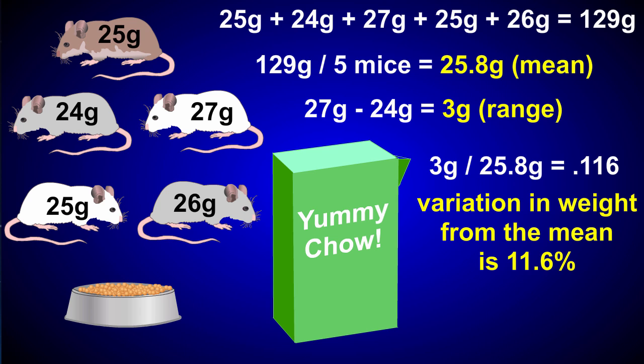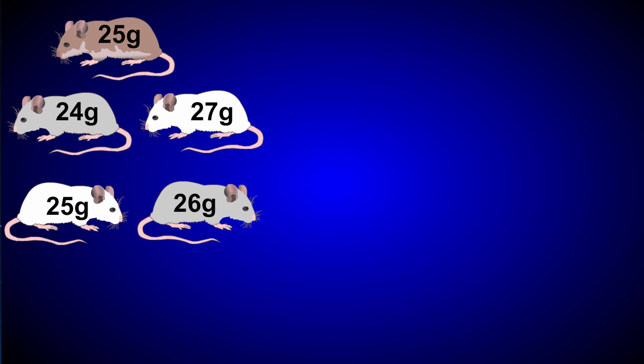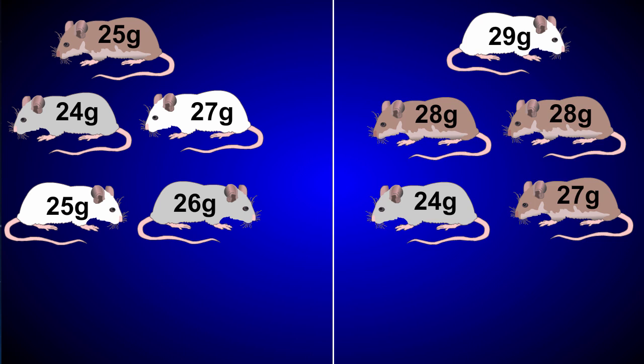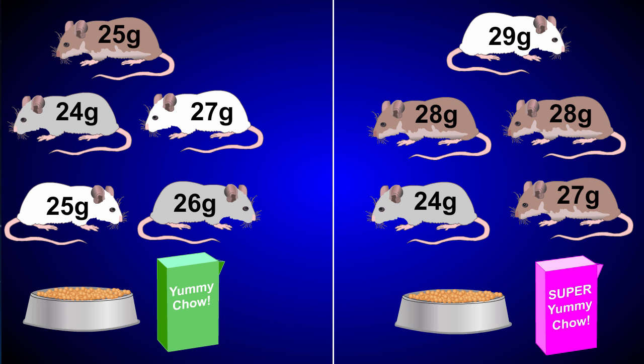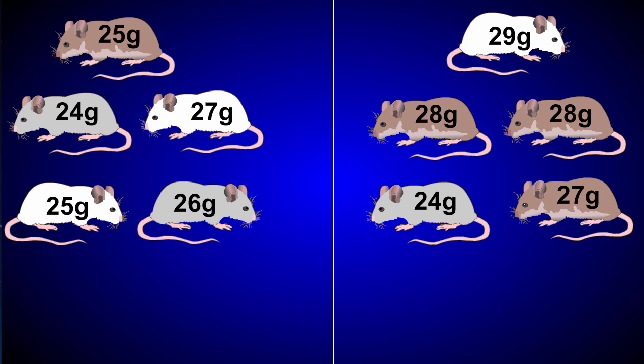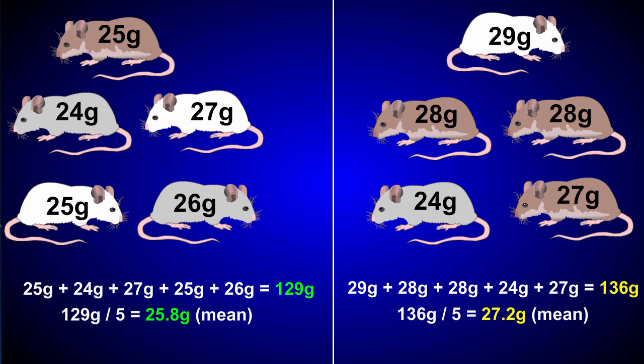But what if you wanted to know whether one type of food resulted in bigger mice? Then, still using math, you could make the same measurements on another group of mice who had been fed super yummy chow. You could then find out how much one population varied from another. Did the mean weight vary, or was a larger range of weights realized? Was the variation the same percentage of mean weight? If you wanted, you could then ask the question about the differences you measured, and use statistical tools of math to determine if the difference was big enough to not have happened by chance. Are the mice as a group who are fed different chow really different, or did the difference just happen by chance?